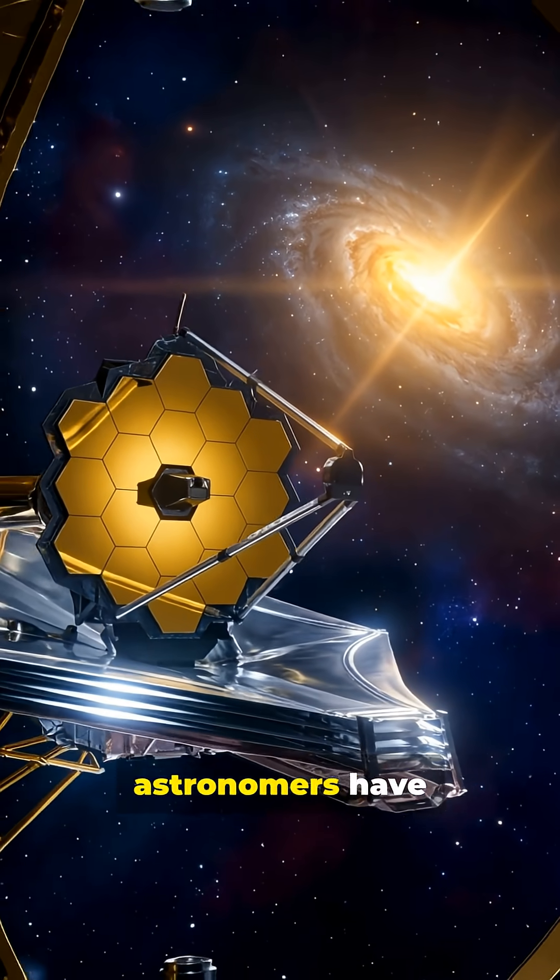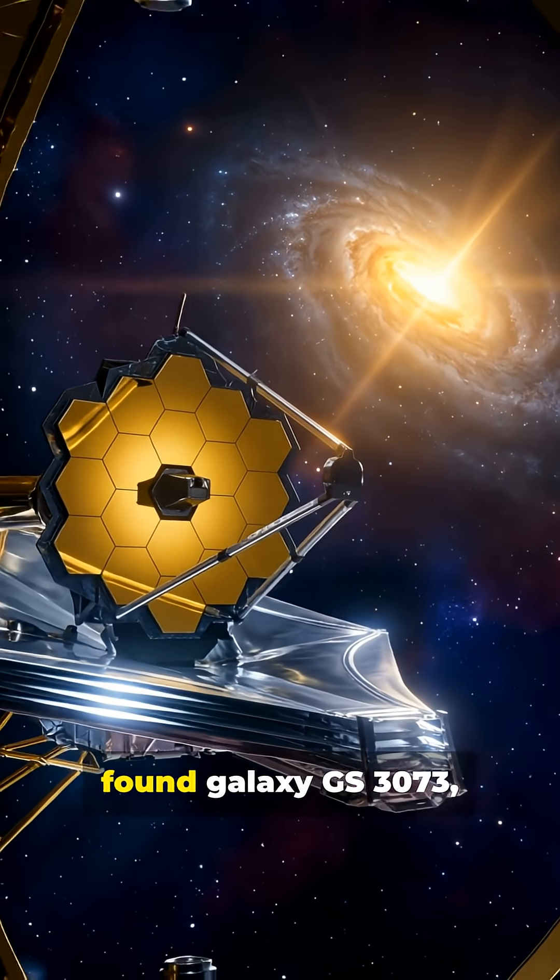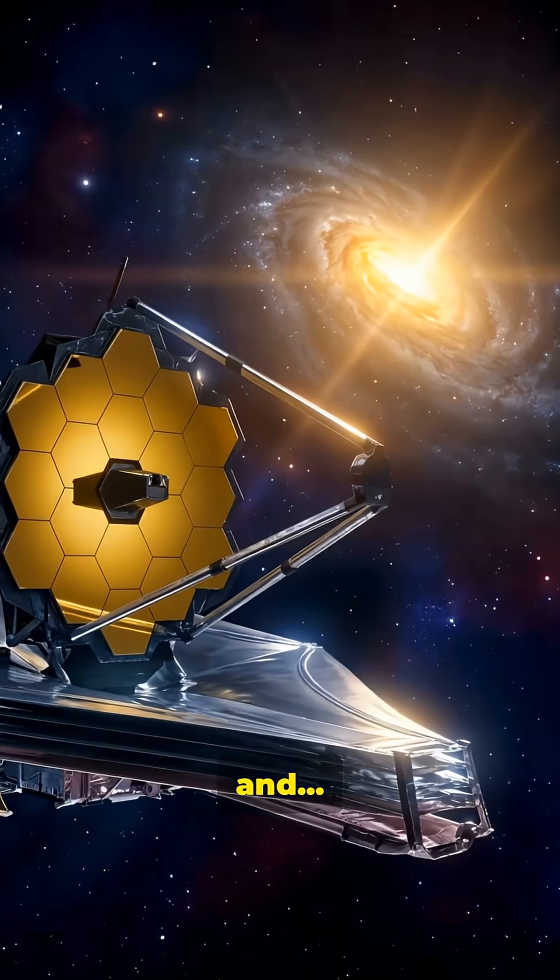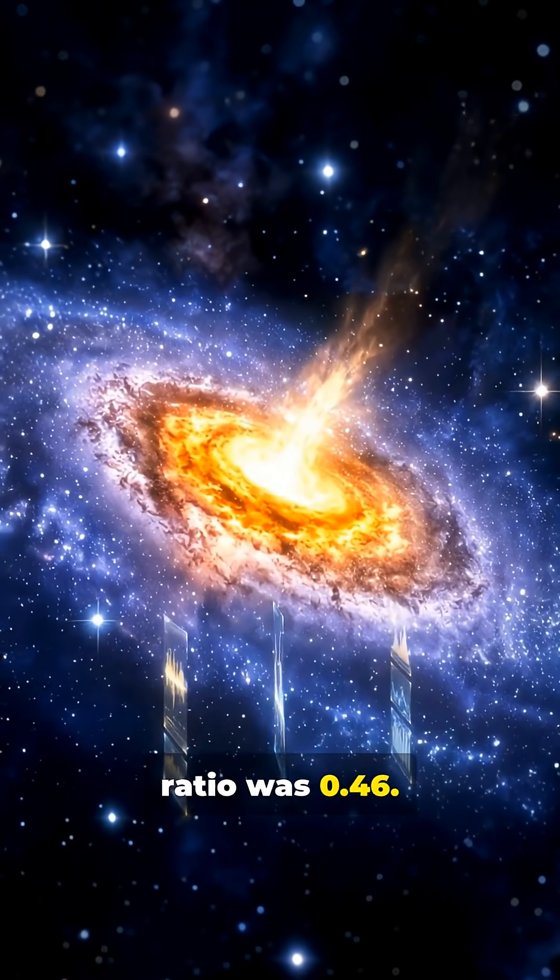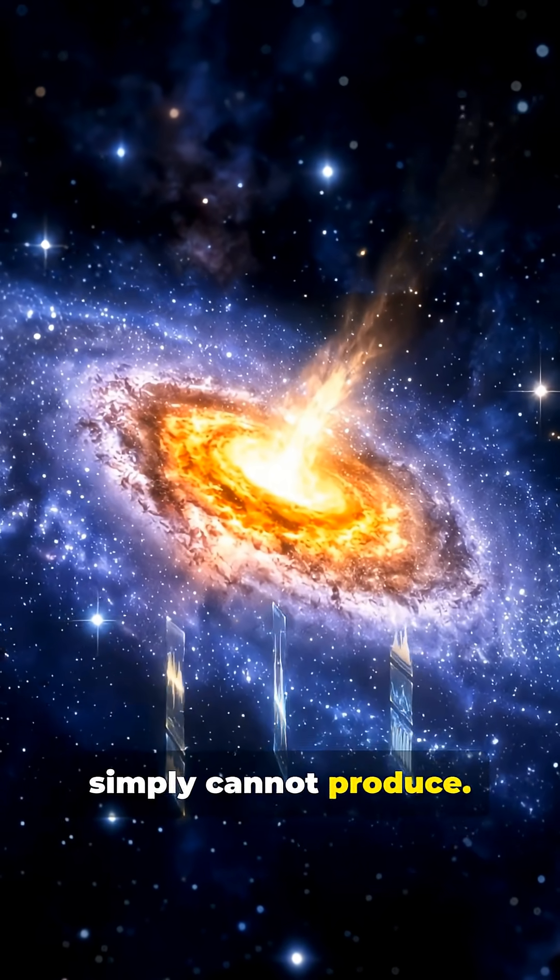For 20 years, astronomers have been scratching their heads. Then the James Webb Space Telescope found galaxy GS37-3. And well, its nitrogen-to-oxygen ratio was 0.46. That number is a cosmic fingerprint that ordinary stars simply cannot produce.